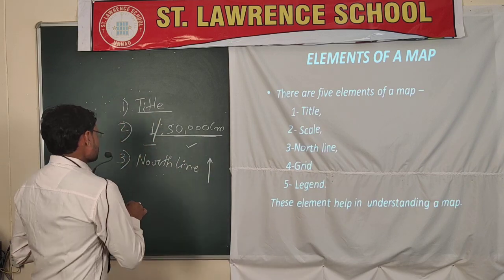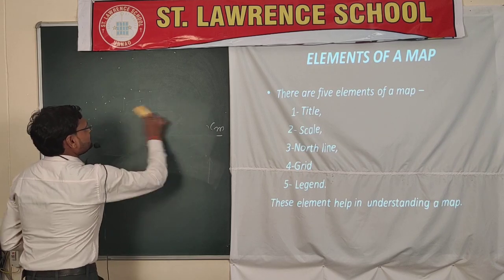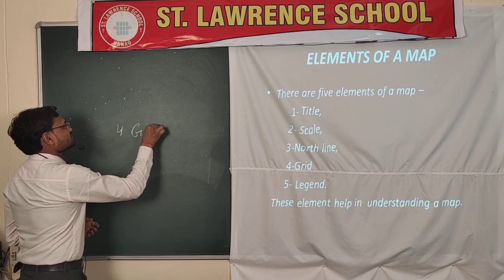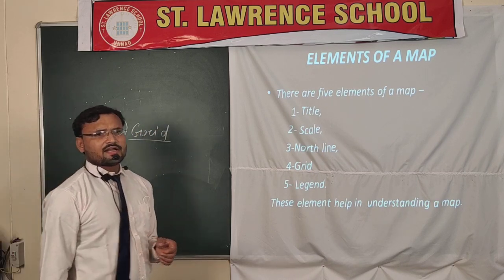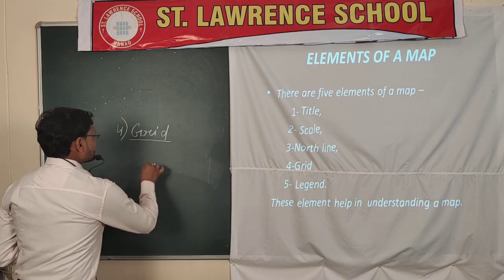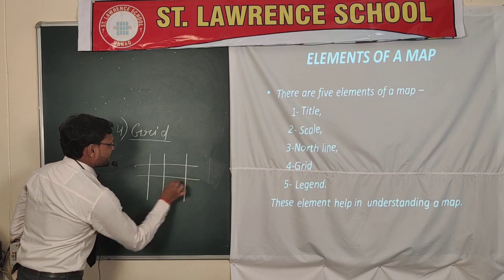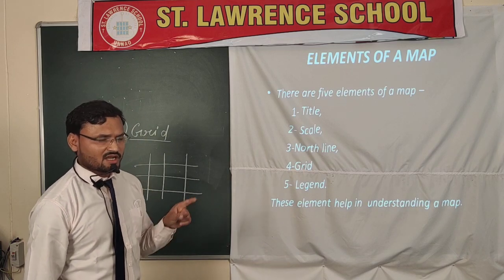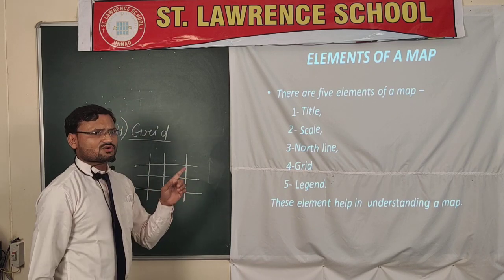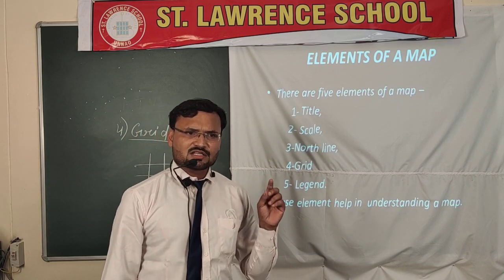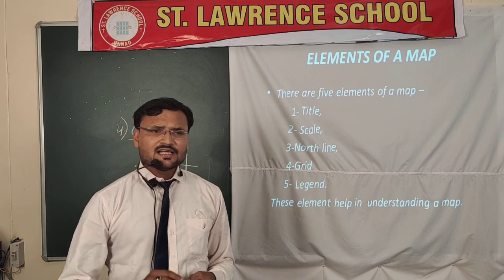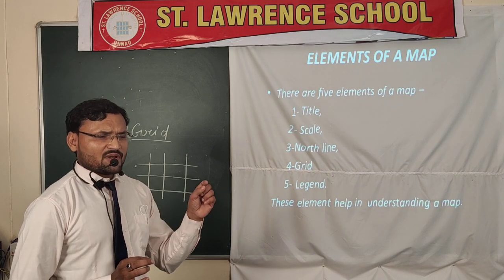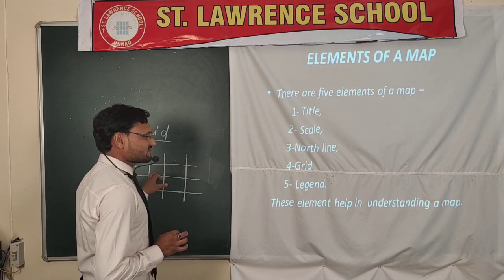Fourth is the grid. Every map contains a grid system of vertical lines and horizontal lines. These lines form boxes on the map. Vertical lines are also called latitudes and horizontal lines are also called longitudes. With the help of these longitudes and latitudes, it is very easy to locate a particular place on the map and determine its actual distance.